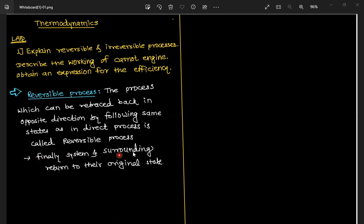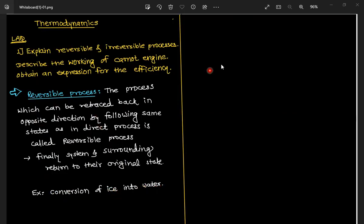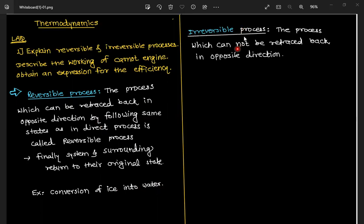We can add that finally the system and surroundings return to their original state. Example: conversion of ice into water is a reversible process. Next is the irreversible process — the opposite of the reversible process.